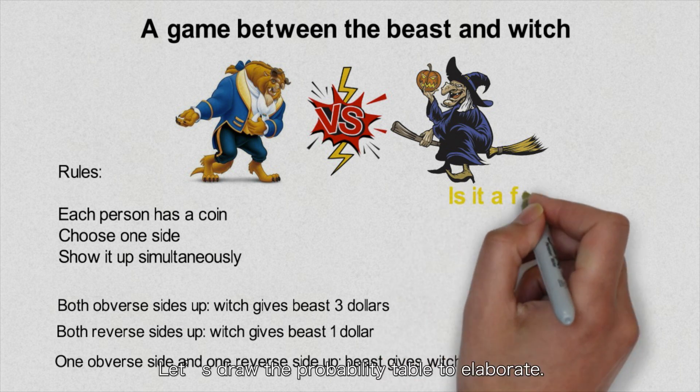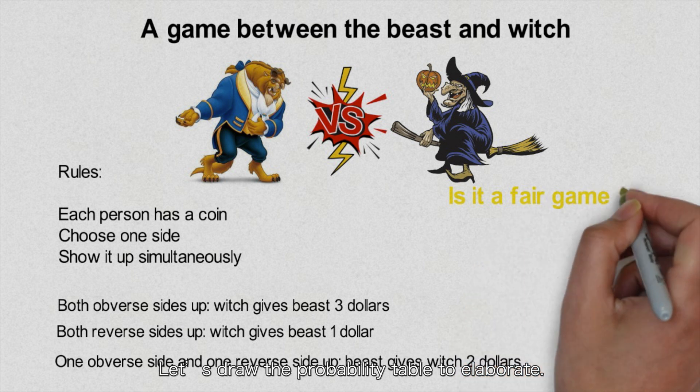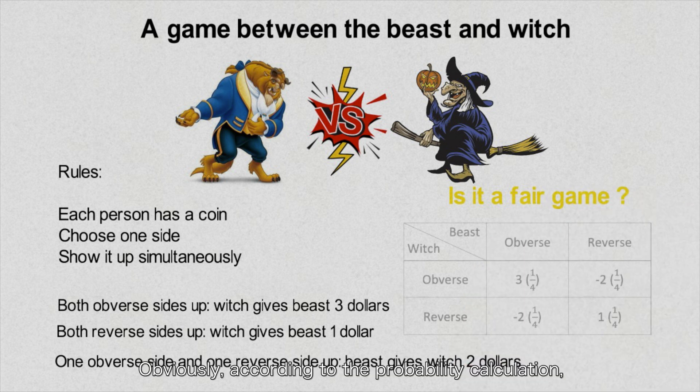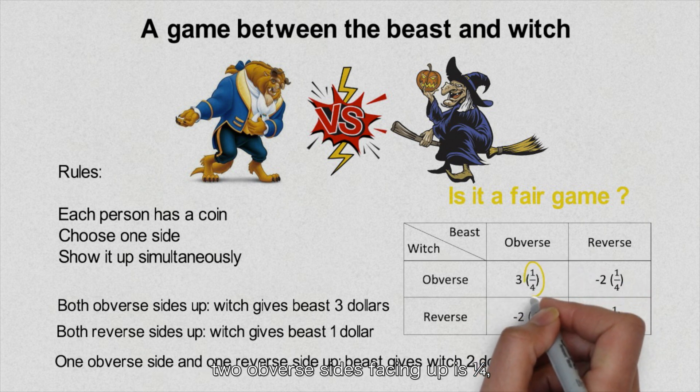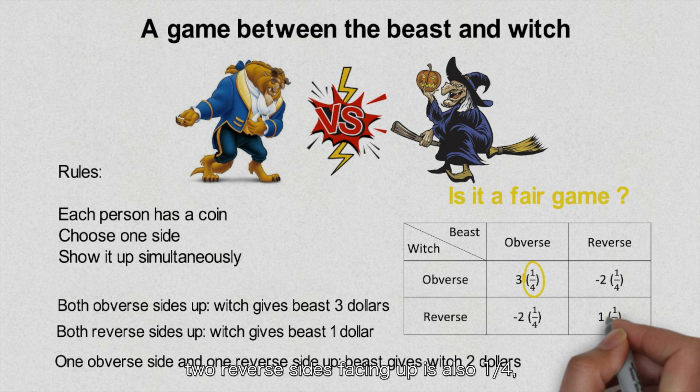In this case, the beast's income of playing this game will be negative. After a thousand runs of game, who earns money will be the winner. It looks like a fair game. Let's draw the probability table to elaborate. Obviously, according to the probability calculation, 2 obverse sides facing up is 1 quarter.